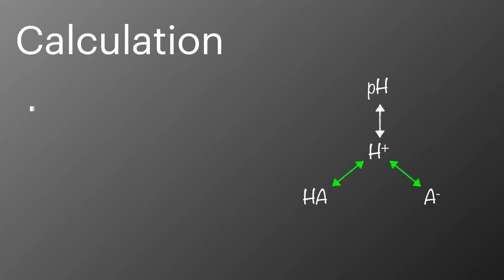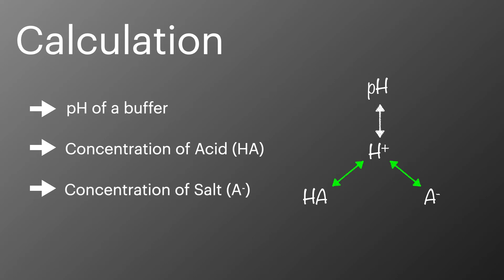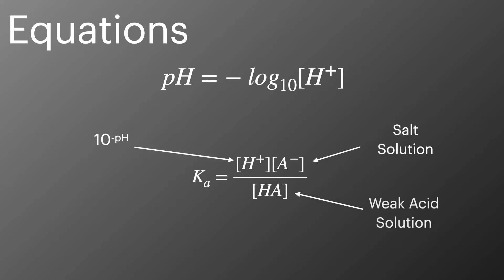We're going to look at calculating the pH of a buffer, the concentration of the weak acid, and the concentration of the salt present in the equilibrium. We're going to look at these over three different examples. These values can all be calculated using two different equations. The first one, the pH expression, can be used to calculate the pH or the concentration of hydrogen ions. And the second one, the Ka expression, is used to calculate the different concentrations of HA or A minus in the solution.